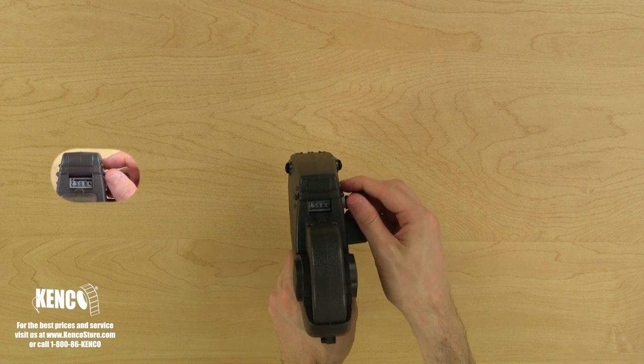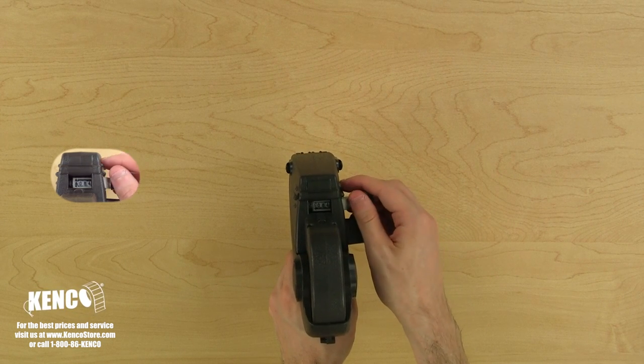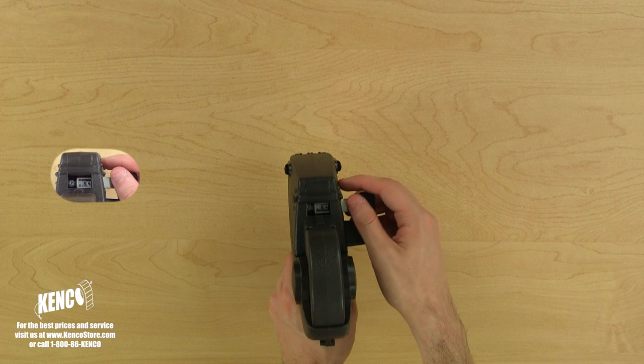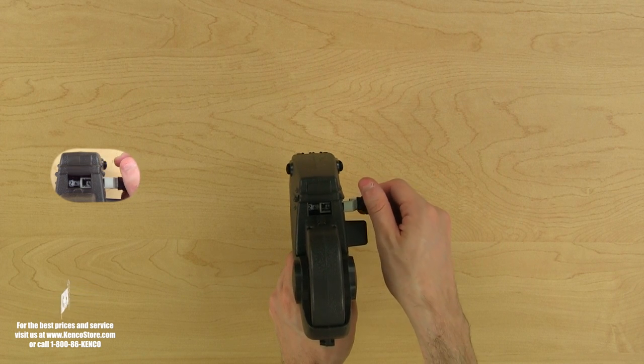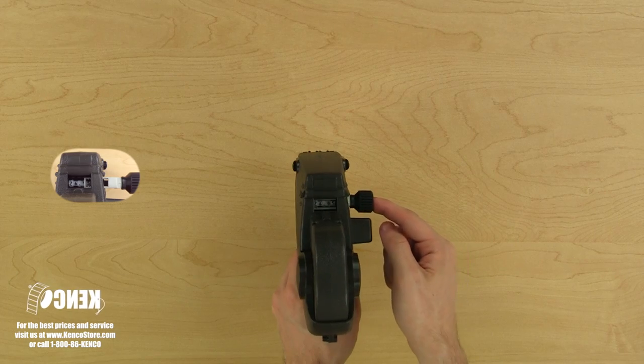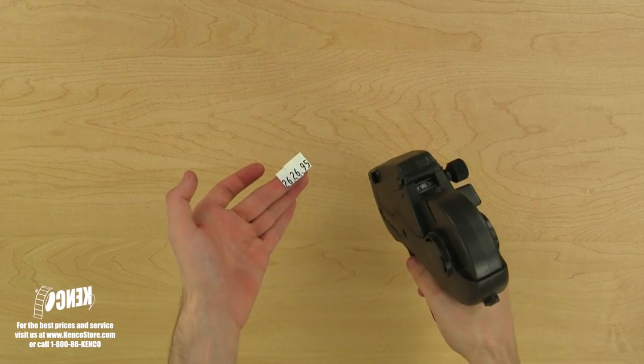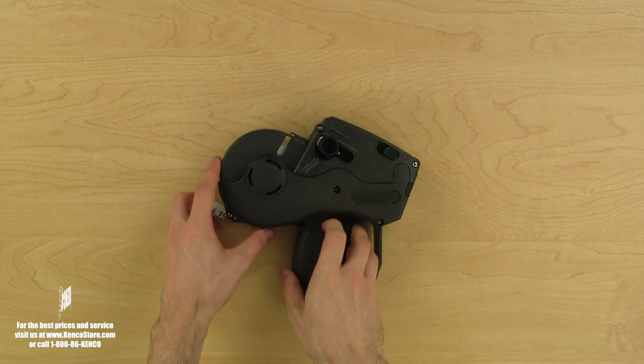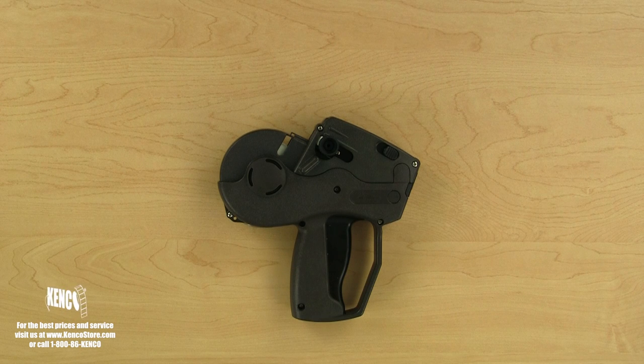Let's change the bands to our desired price by turning the adjustment dial. To move to the next set of digits, simply pull the adjustment dial and the adjustment indicator will follow you to the digit you are currently adjusting. When you have finished adjusting your label gun, be sure to push the adjustment dial back into the printhead and you're all set.